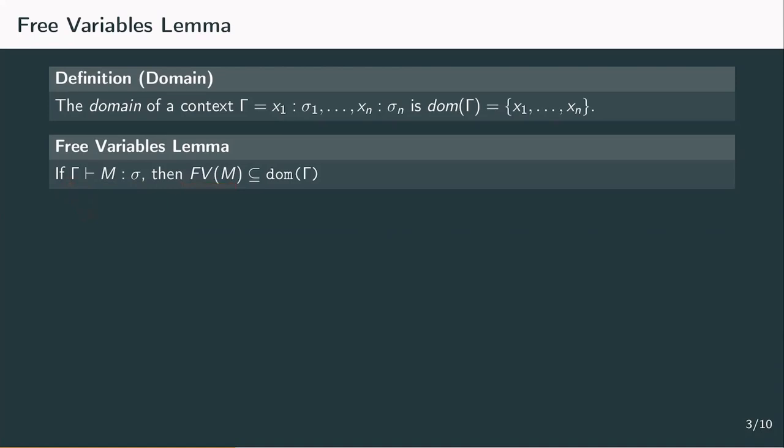We saw that already in the derivation of the statement lambda x of type alpha dot y x is of type alpha to sigma for some sigma. During the derivation, we realized that this couldn't be proven with an empty context, and we had to add the type of the free variable y to the context, which was alpha to sigma.